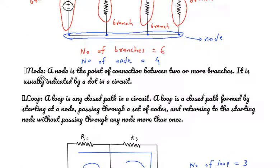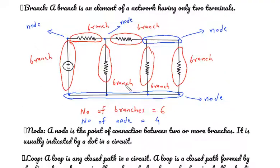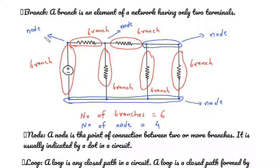What is a node? A node is the point of connection between two or more branches. It is usually indicated by a dot in a circuit. Here we can see this is a node. This is also a node. These two combined branches make one node.